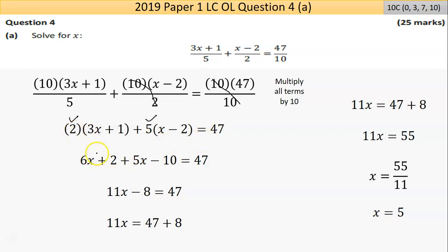Now we go left to right and remove brackets. 2 times 3x is 6x, 2 times 1 is 2, 5 times x is 5x, 5 times negative 2 is negative 10. 47 doesn't change. I want my x's on one side, my numbers to move to the far side. 6x and 5x is 11x. Negative 10 plus 2 is negative 8. In the next step I bring that across to the other side, so negative 8 becomes positive 8.